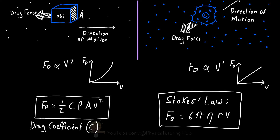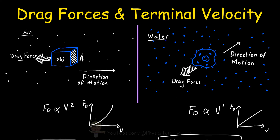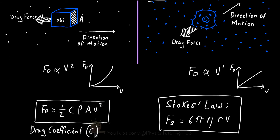In some circumstances, we can use these equations to work out the terminal velocity of objects falling through different gases and fluids. With a bacterium, we also need to take into account the force due to buoyancy, because bacteria have a very similar density to water, so buoyancy becomes significant. We cannot really find the terminal velocity of a bacterium in water just by using Stokes' Law and Newton's Second Law, which states force equals mass times acceleration.